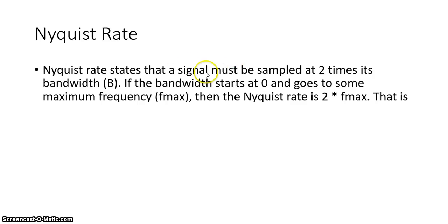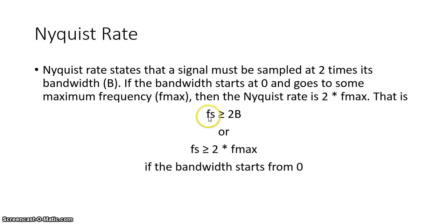When it comes to sampling, we cannot do it randomly — we must sample at what's called the Nyquist rate. The Nyquist rate states that a signal must be sampled at two times its bandwidth. If the bandwidth starts at zero and goes to some maximum frequency f_max, then the Nyquist rate is 2×f_max. The sampling frequency must be greater than or equal to two times the bandwidth or two times f_max. This ensures we avoid aliasing, which we'll discuss later.